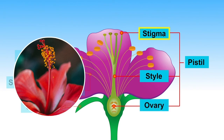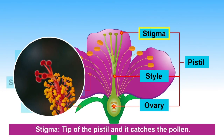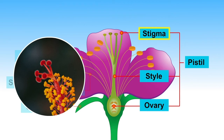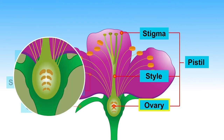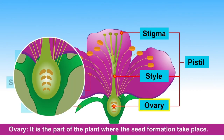Stigma is the tip of the pistil and it catches the pollen. Style is the long tube-like stalk which connects the stigma and ovary. Ovary is the part of the plant where seed formation takes place.